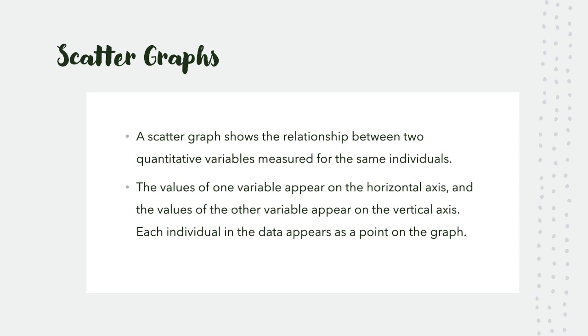Scatter graphs show the relationship between two quantitative variables measured for the same individuals. The values of one variable appear on the horizontal axis and the values of another variable appear on the vertical axis. Each individual in the data appears as a point on the graph. When I was in school and college, I had to retake my maths GCSE, which I never really liked that much, but I did at one point. When I got to college and last years of secondary school, I really hated it.